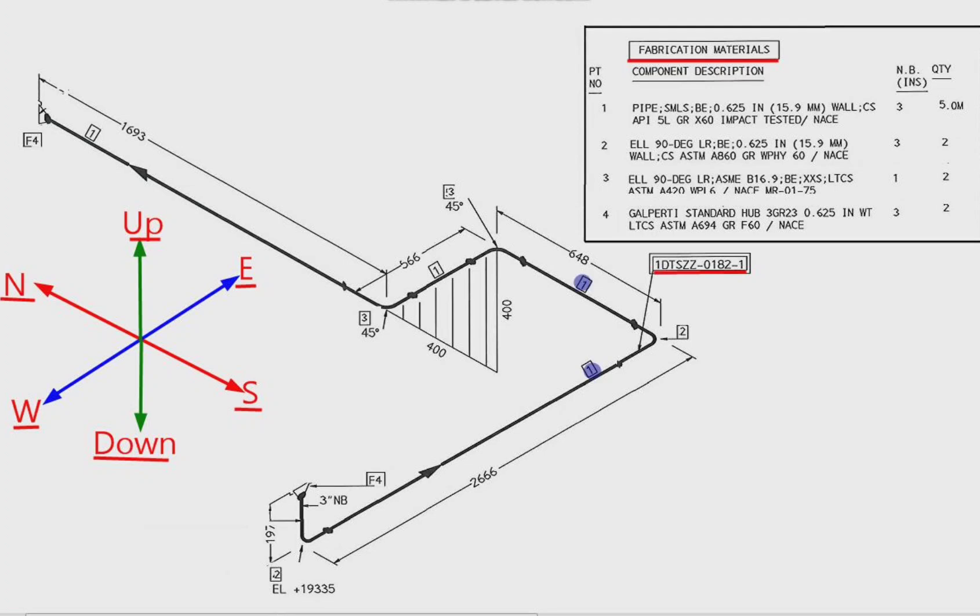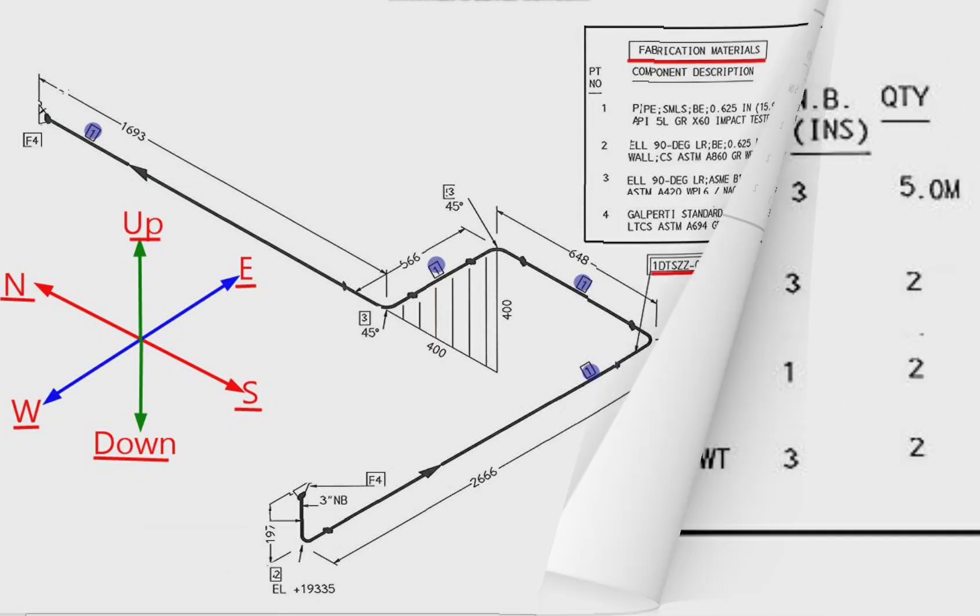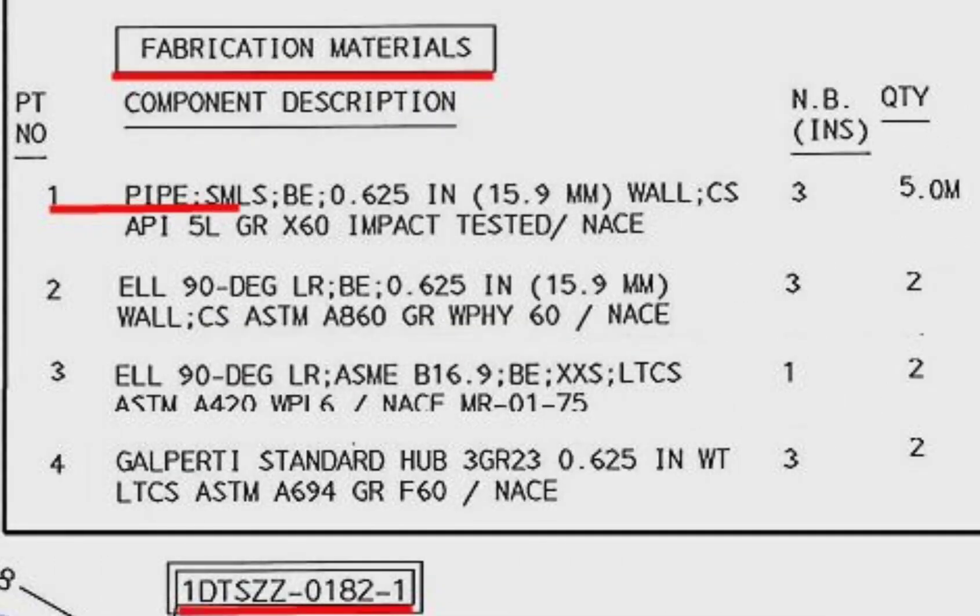Detail number 1 was used in several places in the pipe drawing. Let's look at the material list. The item number 1, pipe, 0.625 inch i.e. 15.9 wall thickness, the material is carbon steel, the size is 3 inch, total length used 5 meters.